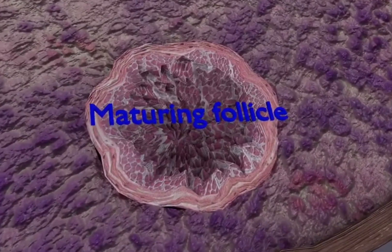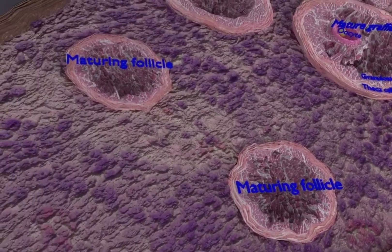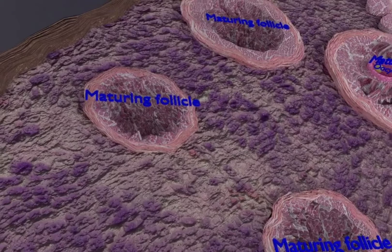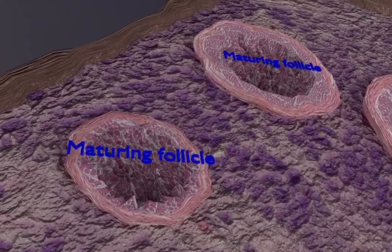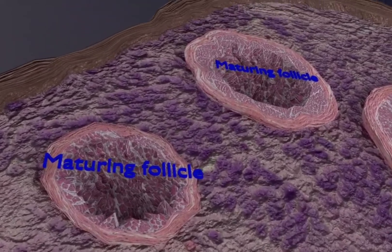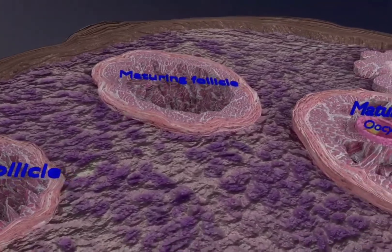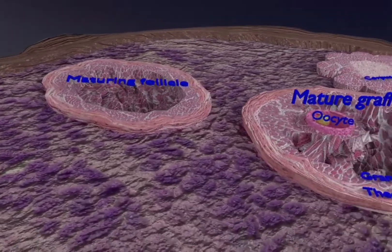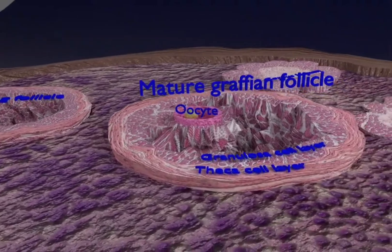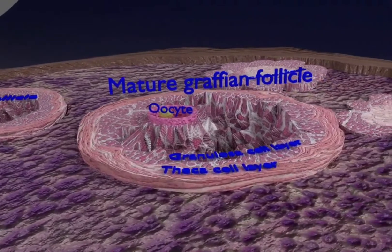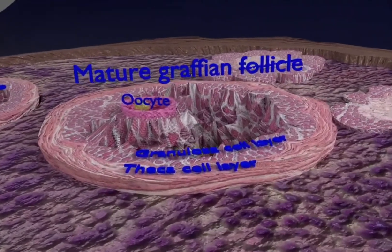You are able to see few maturing follicles. The Graafian follicle is a mature ovarian follicle. The characteristic feature of a Graafian follicle is a central antrum surrounded by three covering layers.